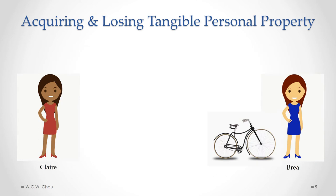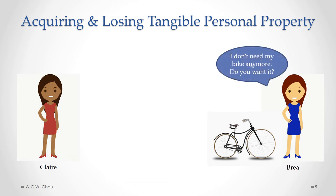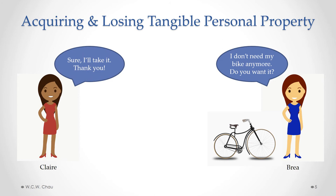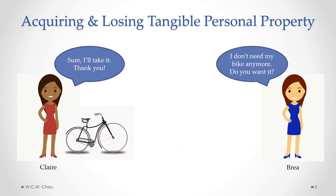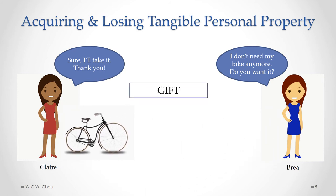Now let's say that instead of selling the bike to Claire, Bria wants to just give it to her for free. She offers the bike for free to Claire, Claire is very willing to take it and is actually very thankful. Bria hands over the bike to Claire. What has happened here is a gift — the ownership has transferred from Bria to Claire by way of gift.